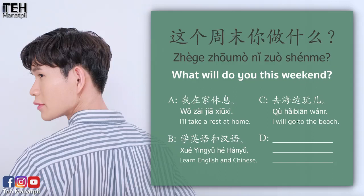สาวาทิตย์นี้คุณจะทำอะไร? แล้วก็คำตอบทุกอันถูกหมด เราจะตอบตามนี้ก็ได้ หรือจะฝึกคิดเองมาก็ได้ เดี๋ยวพูดทั้งภาษาอังกฤษแล้วก็ภาษาจีน เจ้าเกือดโจม่ะ ก็คือ this weekend แปลว่าวันสุดสัปดาห์นี้ สาวาทิตย์นี้นั่นเอง หนี ก็คือ you แปลว่าคุณ จัว ก็คือ do แปลว่าทำ สม่ะ ก็คือ what แปลว่าอะไร รวมทั้งหมด: สาวาทิตย์นี้เธอจะทำอะไร?